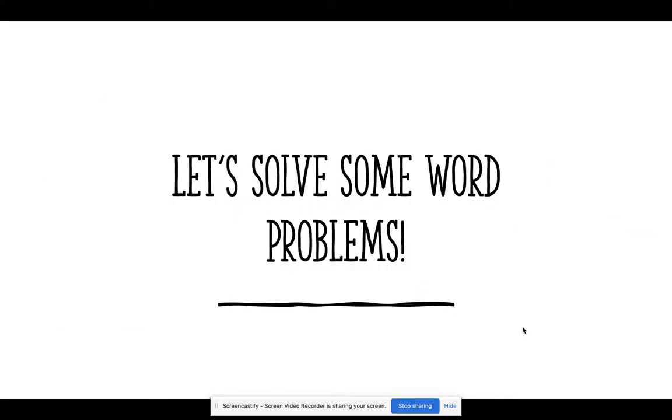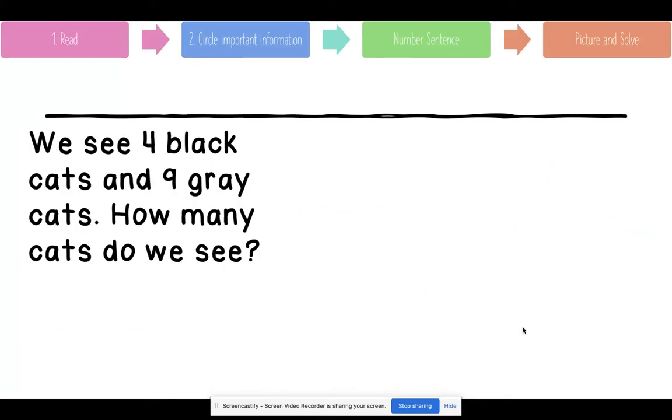Let's solve some word problems. First, we need to read. We see four black cats and nine gray cats. How many cats do we see? Now we need to circle the important information. What do you think was important here?